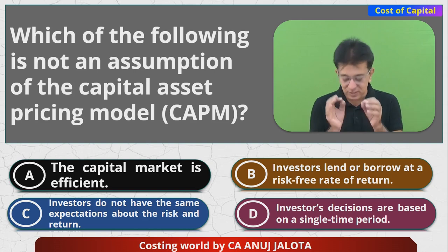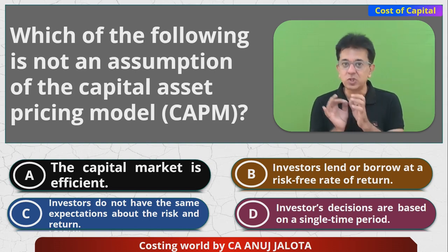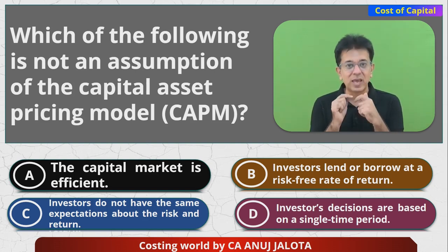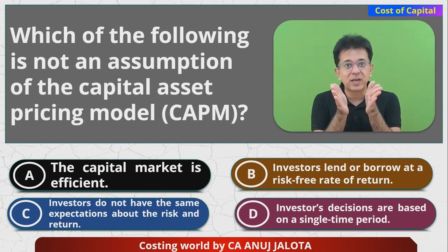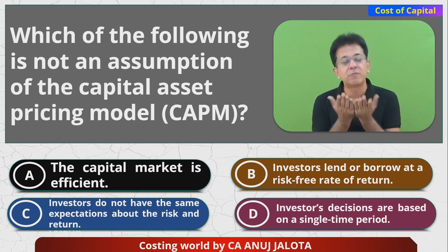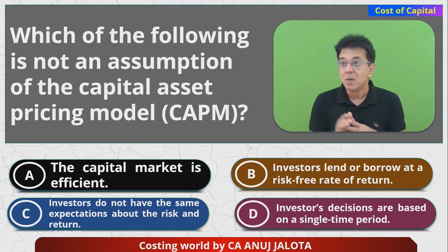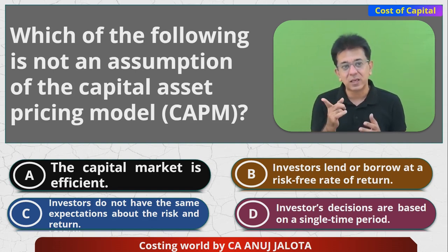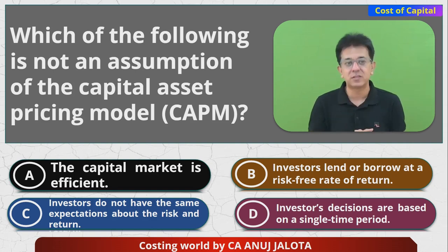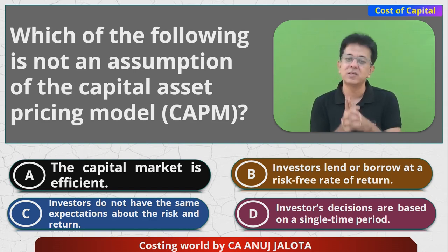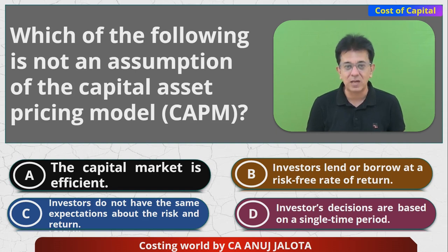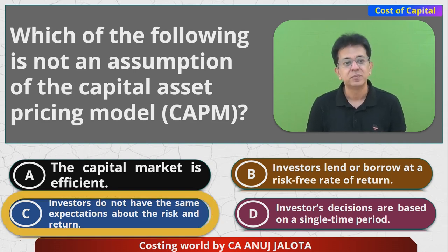So the answer is C — 'investors do not have the same expectations about risk and returns' is NOT a CAPM assumption; in fact, CAPM assumes they do have the same expectations. In reality, every shareholder is different, but since a company needs one single Ke, the model must assume uniform expectations. Therefore, option C is the correct answer.